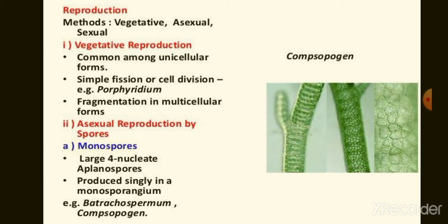Next, reproduction. Reproduction takes place by vegetative, asexual, and sexual methods. Vegetative reproduction takes place by fragmentation. Asexual reproduction takes place by production of different types of spores like monospores, neutral spores, and polyspores.